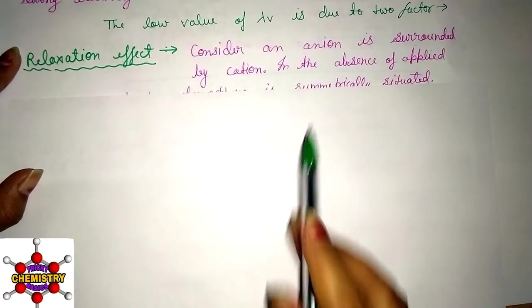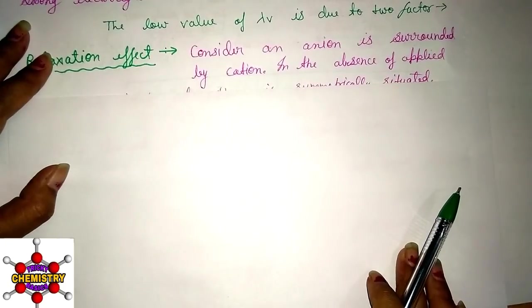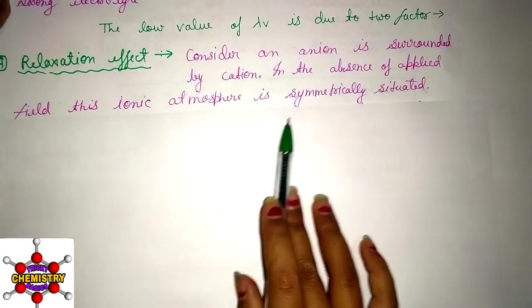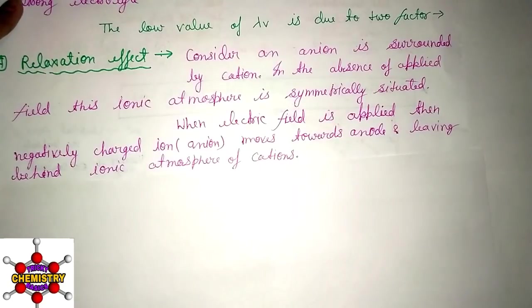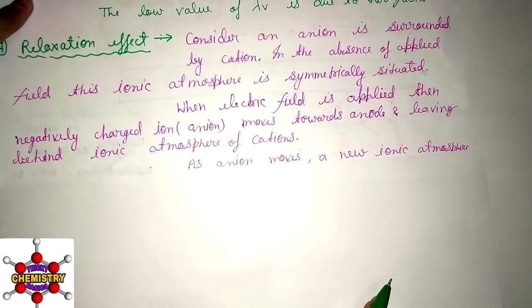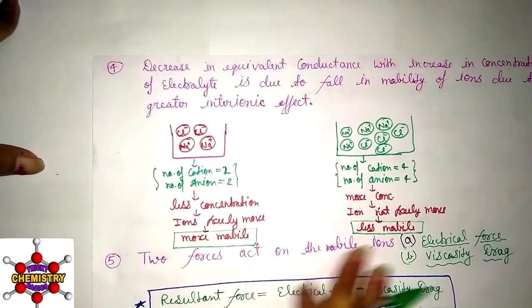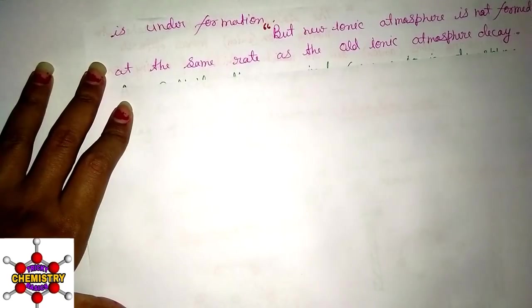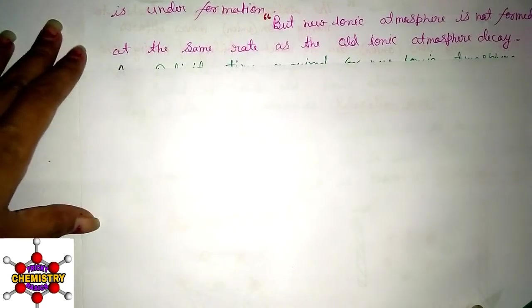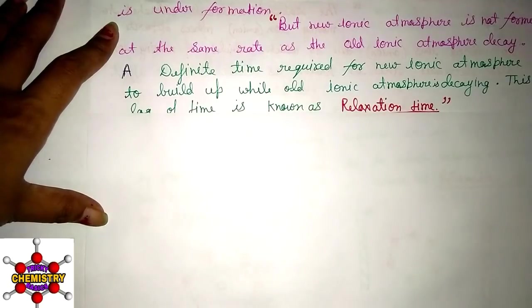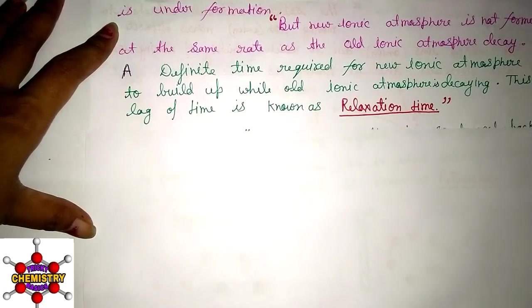Consider an anion surrounded by cations forming an ionic atmosphere. In the absence of an applied electric field, the ionic atmosphere is symmetrically situated around the ion. When an electric field is applied, the negatively charged anion moves toward the anode, leaving behind its ionic atmosphere of cations. As the anion moves, a new ionic atmosphere forms, but it does not form at the same rate as the old ionic atmosphere decays. The time required for the new ionic atmosphere to build up is called the relaxation time.